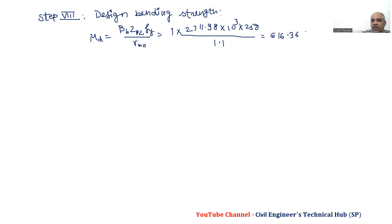By using this clause, we can determine design strength in Step 8. So Step 8 we have: design bending strength. And then we have this formula: MD equal to beta B, ZPZ, FY upon gamma M0. Beta B is 1. ZPZ we have 2711.98 into 10 to the power 3 into 250 upon 1.1. And it comes 616.36 kilonewton-meters, greater than MU 600 kilonewton-meters. Therefore, safe.